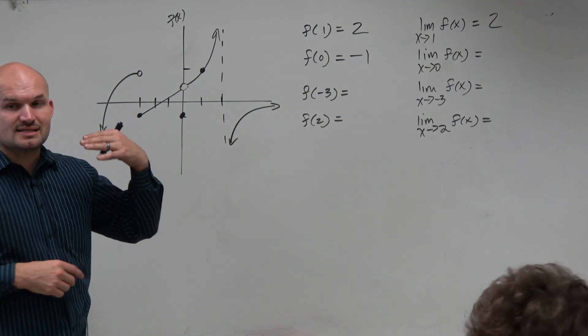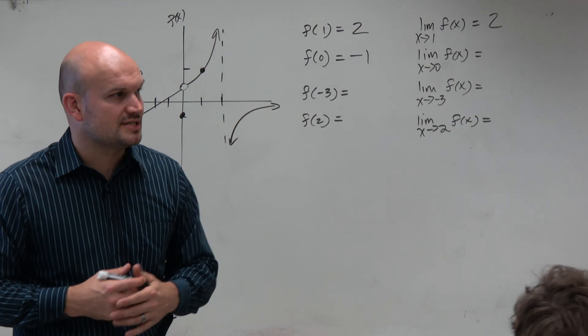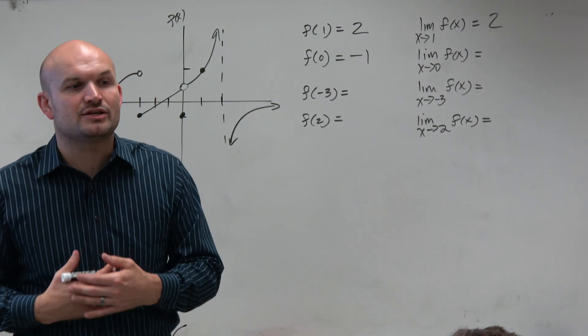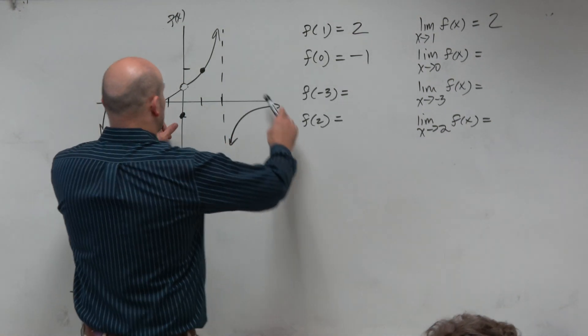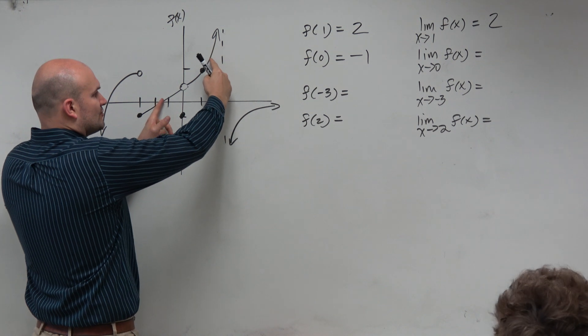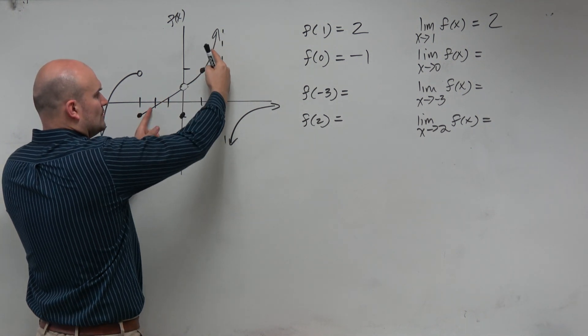So now, the next thing is, let's answer the limit question. The limit question is saying, but then what is the value that the graph is approaching? So again, we follow our fingers here, and we see that it's approaching not negative 1. It's approaching what?